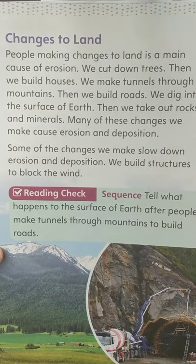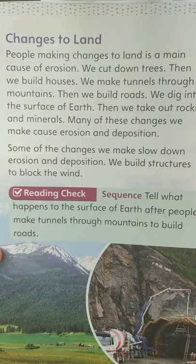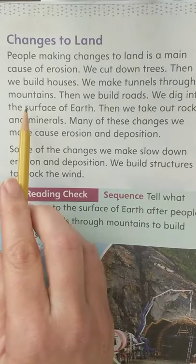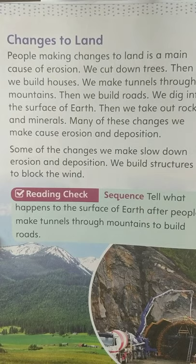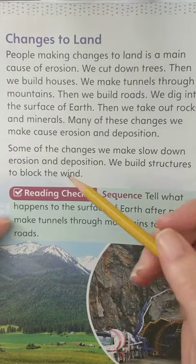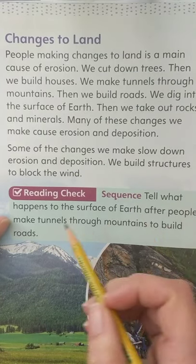Changes to land — people making changes to land is a main cause of erosion. We cut down trees, then we build houses. We make tunnels through mountains, then we build roads. We dig into the surface of the earth and take out rocks and minerals. Many of these changes cause erosion and deposition, but some of the changes we make slow down erosion and deposition — for example, we build structures to block the wind.